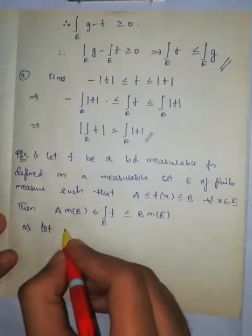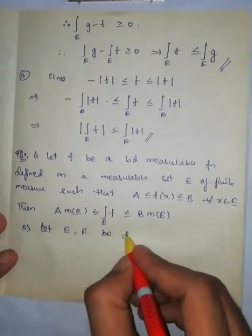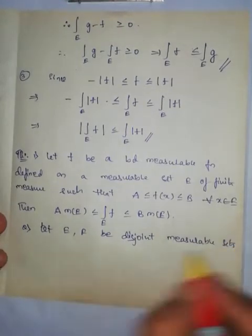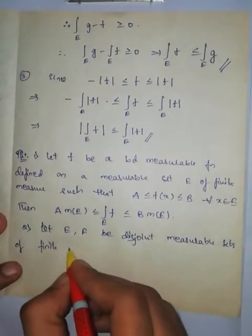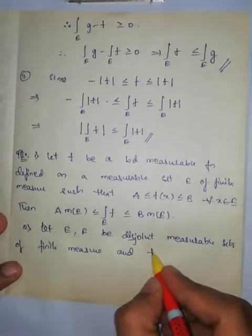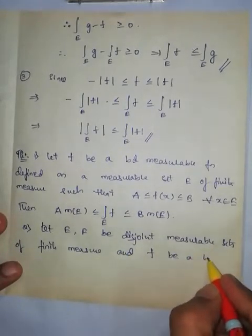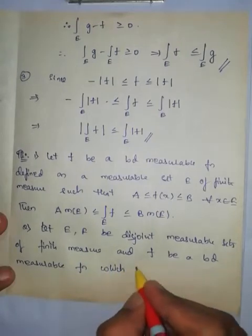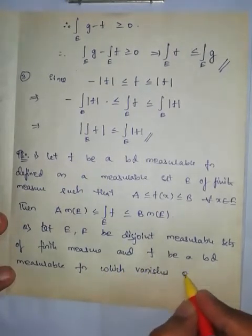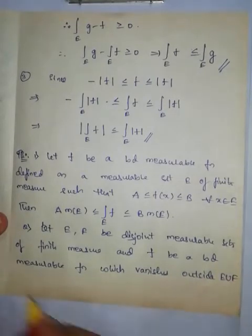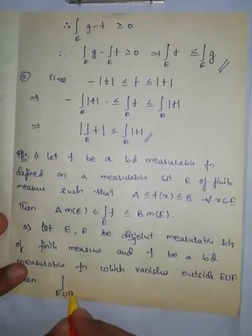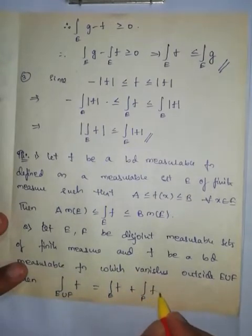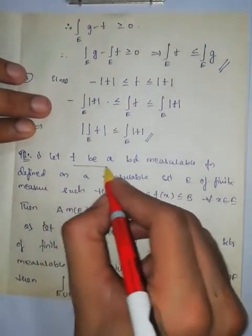Theorem two: Let E and F be disjoint measurable sets of finite measure, and let f be a bounded measurable function which vanishes outside E union F. Then the Lebesgue integral over E union F of f is equal to the Lebesgue integral over E of f plus the Lebesgue integral over F of f.